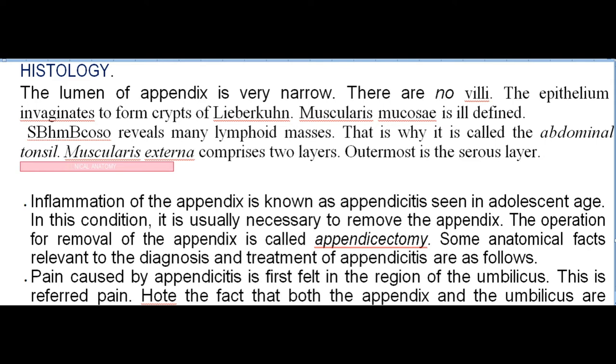Histologically, the lumen of the appendix is very narrow, with no villi. The epithelium invaginates to form crypts of Lieberkühn. The muscularis mucosae is ill-defined. The submucosa reveals many lymphoid masses, which is why the appendix is called the 'abdominal tonsil.' The muscularis externa comprises two layers; the outermost is the serous layer. Inflammation of the appendix, appendicitis, is seen in adolescent age and usually requires appendicectomy.